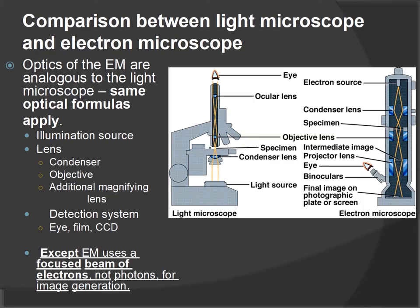Comparing the light microscope and the electron microscope: the optics of the electron microscope are analogous to the light microscope, with the same optical formulas applied. Both have an illumination source, lenses consisting of condenser, objective, and additional magnifying lenses, and a detection system such as the eye, film, CCD, or camera. The key difference is that the SEM uses a focused beam of electrons, not photons, for image generation.